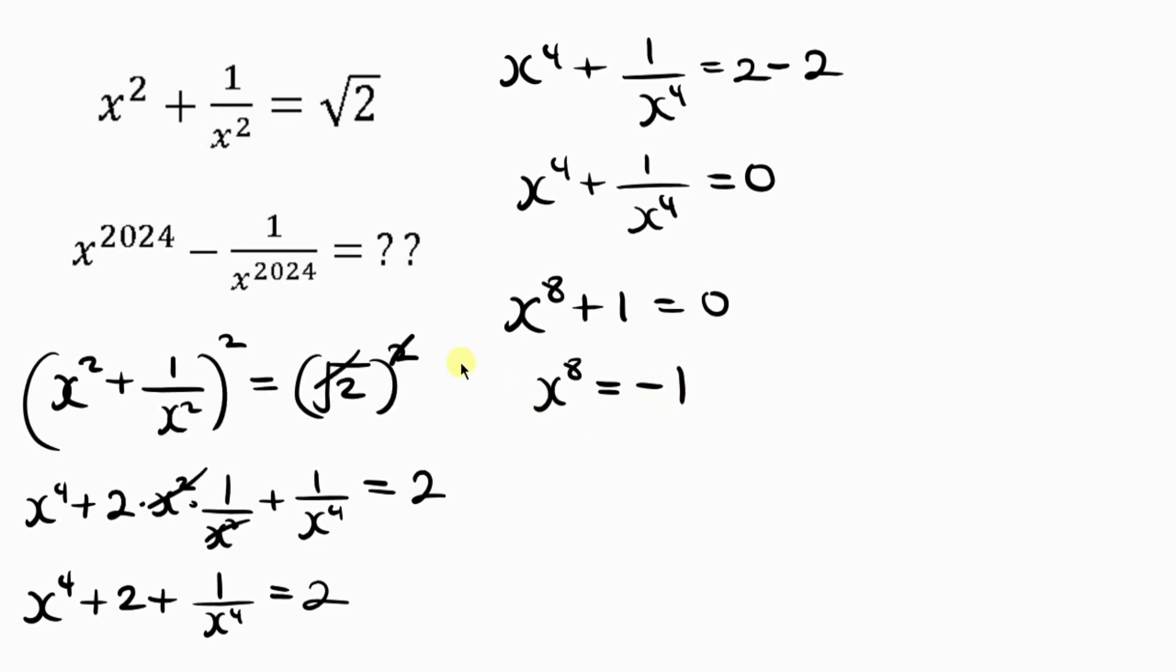Now look at what we have from the question. This one has a power of 2024 and this one has a power of 8. So how do we get our value? You notice that 8 is a factor of 2024, which means I can rewrite this expression as x to power 8 raised to power 253. Remember from indices powers multiply. That means when I multiply 8 times 253 I'm going to be having 2024.